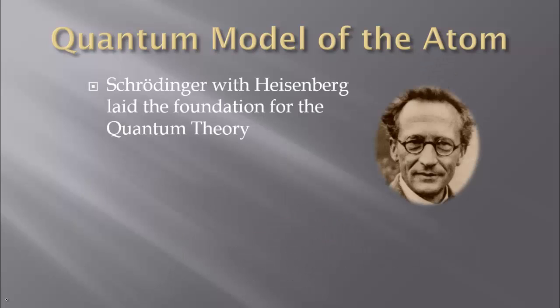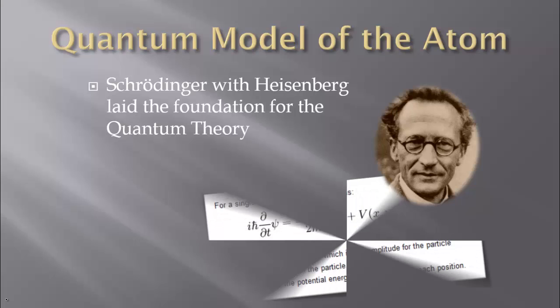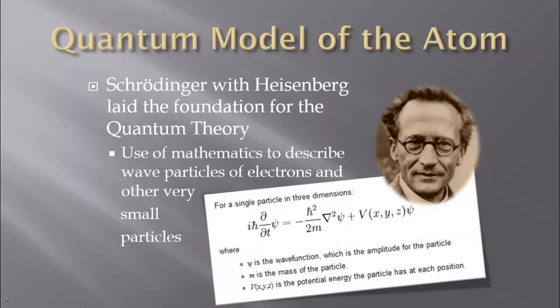Then Schrödinger, with the idea and help of Heisenberg, lays the foundation for this quantum theory. There's the equation — do I want you to know that equation? Of course not. That math is probably beyond me at this point too. These are very smart mathematicians — or physicists — who used mathematics to describe the wave particles of the electrons. And thus, if they could do it for electrons, they could do it for other really small particles.